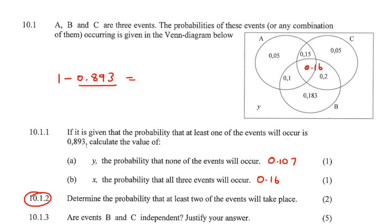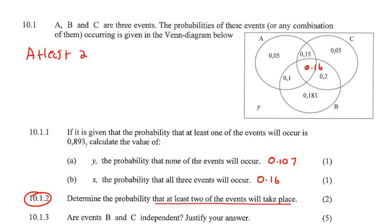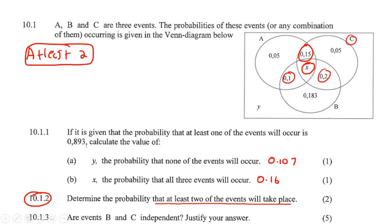This question says: determine the probability that at least two of the events will take place. At least two means two or more. So where are the places where two or more events occur? This part here is when A and C are taking place together. This part is when C and B are happening together. This part is when A and B are taking place together. And we also include when all three occur. So you add all of those together: 0.15 plus 0.1 plus 0.2 plus X, which we calculated as 0.16, giving us 0.61.